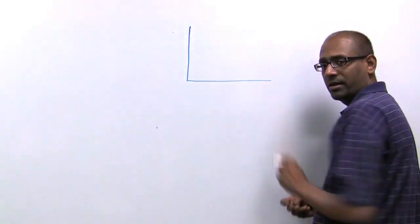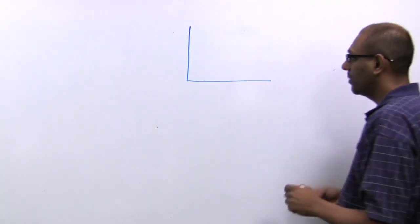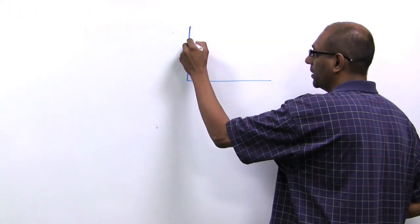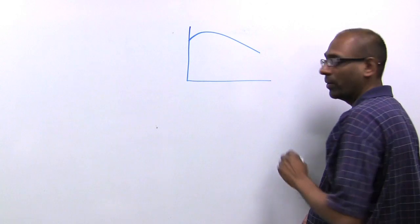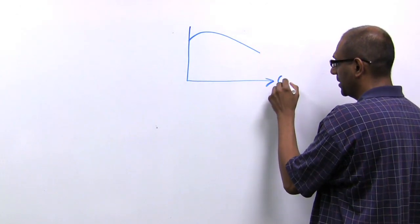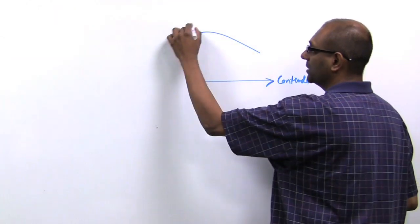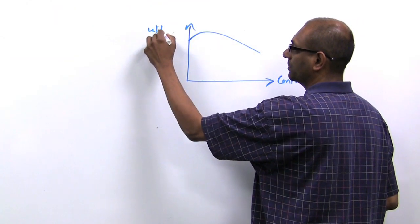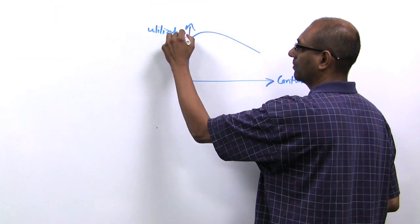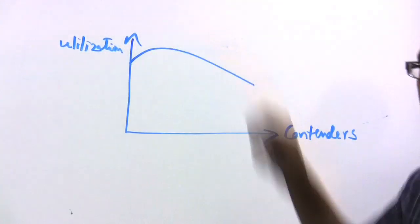The standard Ethernet graph, which most students of the art are familiar with, looks like this. The x-axis is the number of contenders, and the y-axis is the channel utilization. Broadly, this equates to throughput.